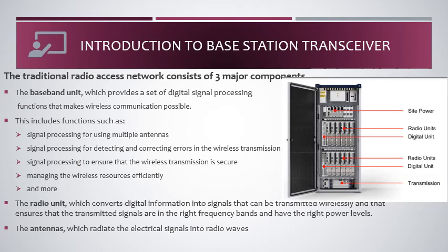The base station controller resides in the customer's network operations center. For example, taking the example of ATL, their ATL office — called the network operations center (NOC) — has the base station controller, mobile switching center, and everything placed there. When the call is processed from the base station, it is transmitted using this transmission unit, either through a microwave link or through an optical link to the core network.